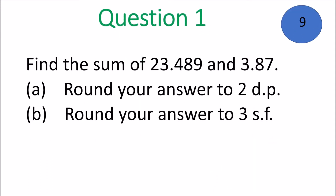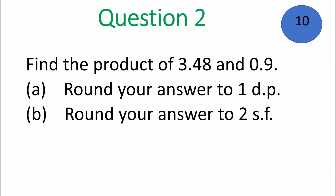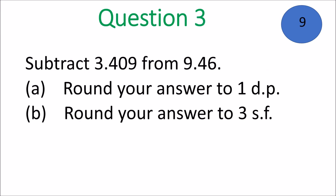Question 1: These are typical questions you would encounter on exams. Please use your calculators. Find the sum of those two numbers — you need to know what sum means before you can round it to decimal places or significant figures. Question 2: Find the product of those two numbers — you need to know what product means. Use your calculator, work it out, then round it to one decimal place, and then round it to two significant figures. Question 3: Subtract 3.409 from 9.46. Do the subtraction. Round your answer to one decimal place, then round it to three significant figures.